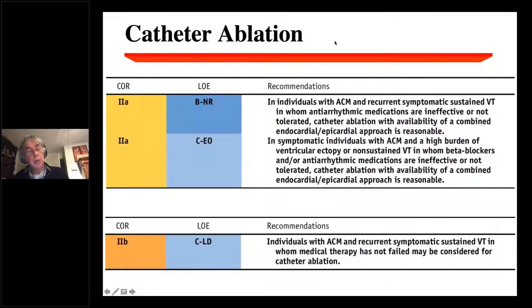And the last topic is obviously on catheter ablation, which is an important addition to these patients and quite frequently needed. There is a class 2A indication for all individuals with ACM and recurrent symptomatic sustained VT in whom antiarrhythmic medications are ineffective or not tolerated. And in symptomatic individuals with ACM and a high burden of ventricular ectopy or non-sustained VT where beta-blockers are ineffective.